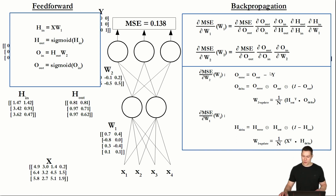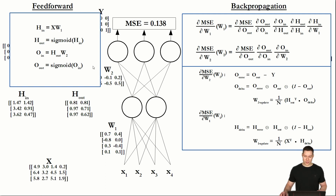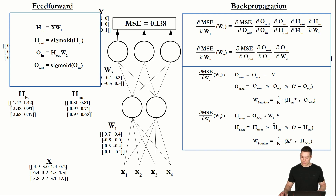The only new expression is the partial derivative of O_in with respect to H_out — the movement from one layer to the other. This is something we haven't seen before, but it's not really new because, again, this partial derivative is just the derivative of a matrix multiplication. Since the opposite corresponding element of H_out is weight matrix 2, to calculate H_error we simply multiply O_delta with weight matrix 2. To understand exactly how to do that, we need to look at the scalar notation for these functions.